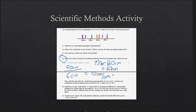You'll do that for all three pairs — blue and yellow, yellow and red, and blue and red — giving you three different scale factors. Then average the results by adding the three values together and dividing by three. Report your average scale factor and don't forget the units.